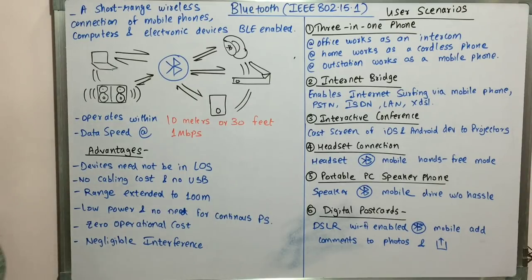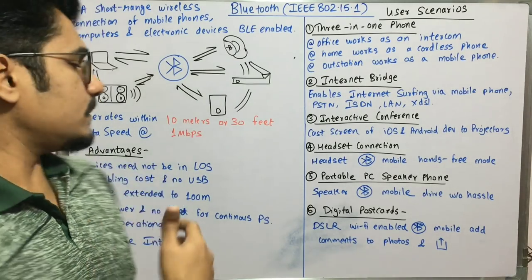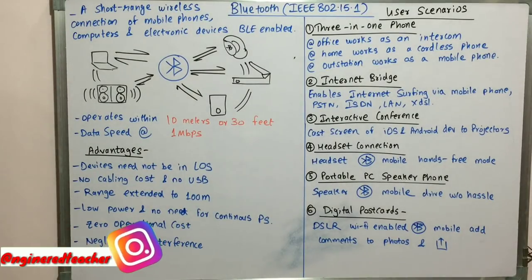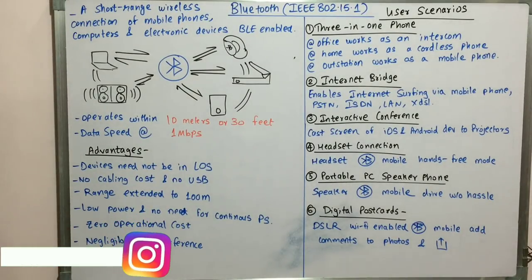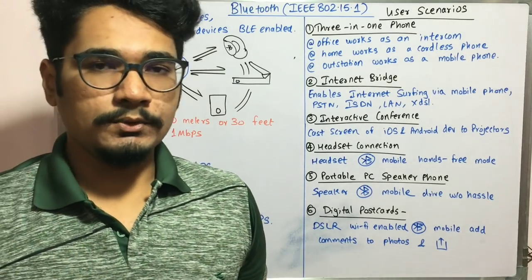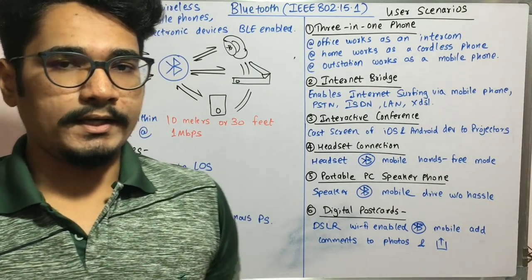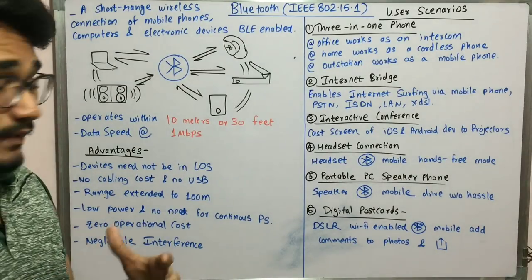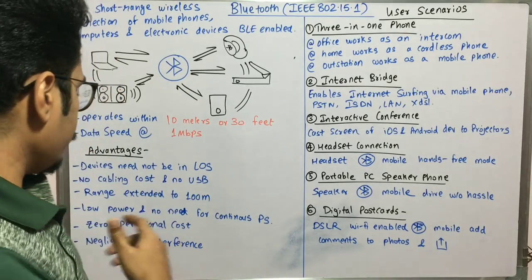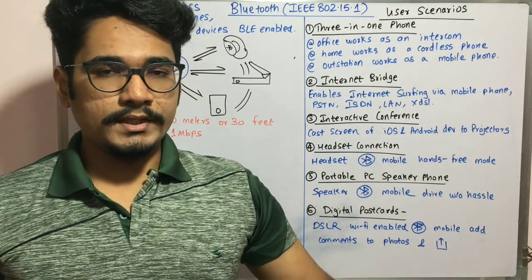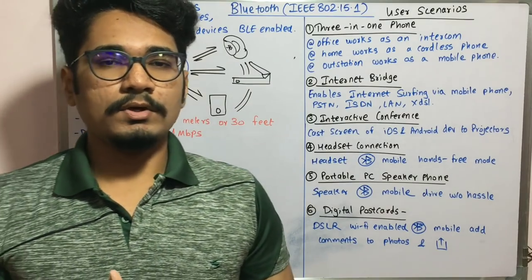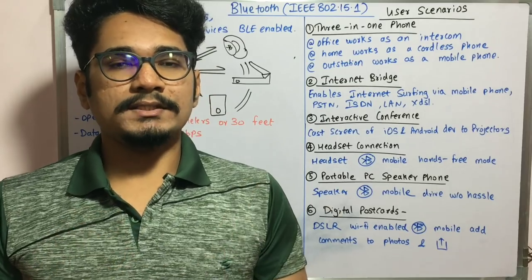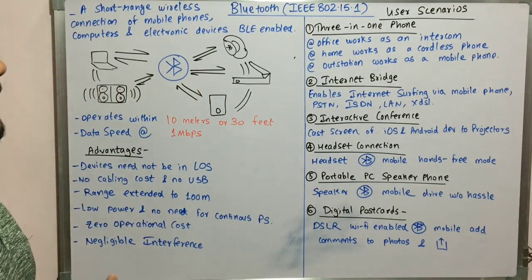The range can be extended to over 100 meters using Bluetooth extenders, going beyond the standard 10-meter range. It has low power consumption and does not need a continuous high power supply — you can see how little battery percentage it utilizes on your smartphone. There is also no operational cost associated with it, and there is negligible interference, as demonstrated when two devices — the headset and the speaker — were connected simultaneously without any interference.